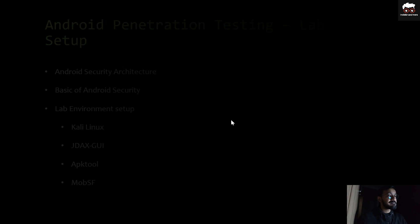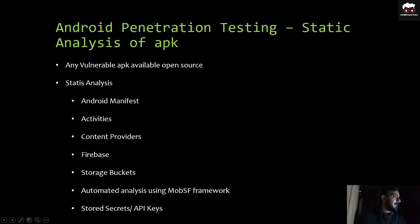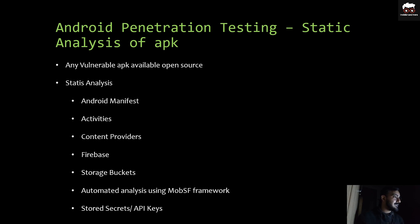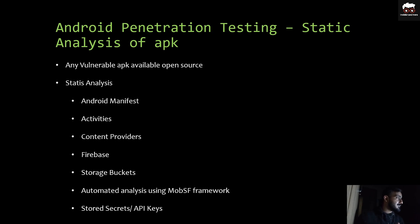For mobile application parameters and testing, there are two types of testing: the first is static analysis and the second is dynamic analysis. For static analysis of an APK, I will cover an example of a vulnerable open-source application, including understanding the Android manifest file, activities, content providers, Firebase storage buckets, and automation framework tools like MobSF.